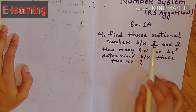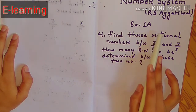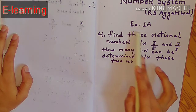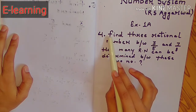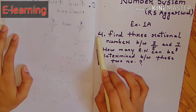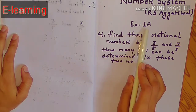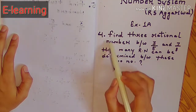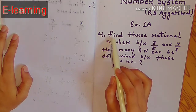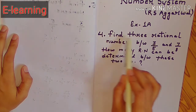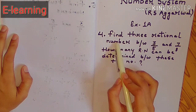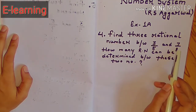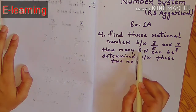Hello students, welcome back to my channel e-learning accounts and maths. Let's do question number 4 of exercise 1a — that is Number System. The question is: find three rational numbers between 3/5 and 7/8.